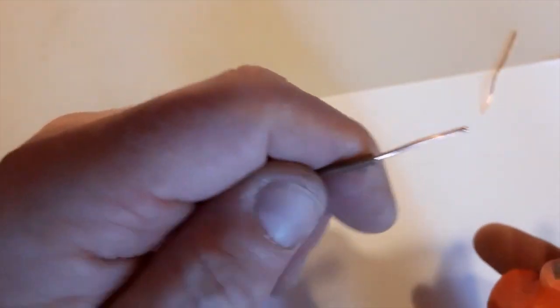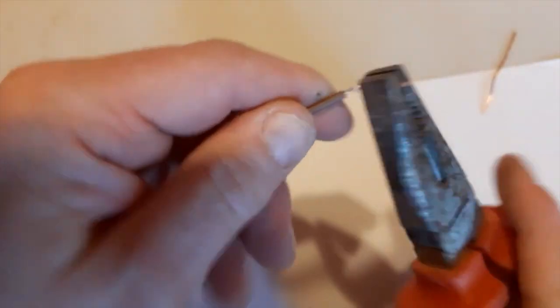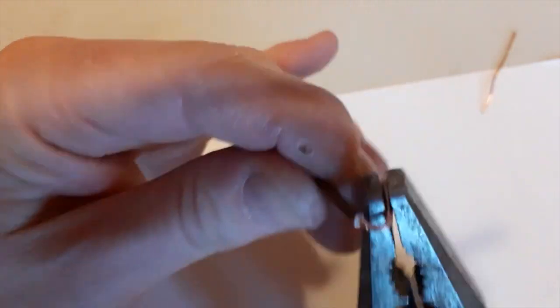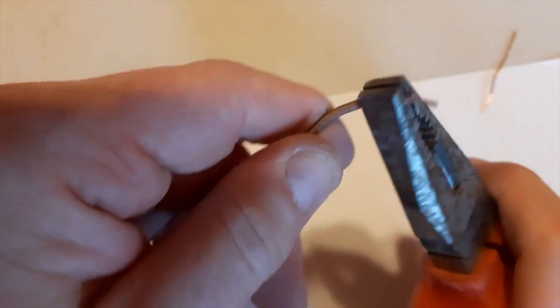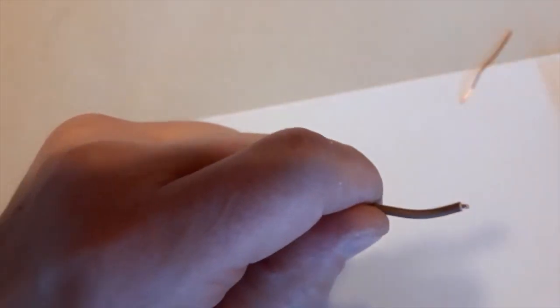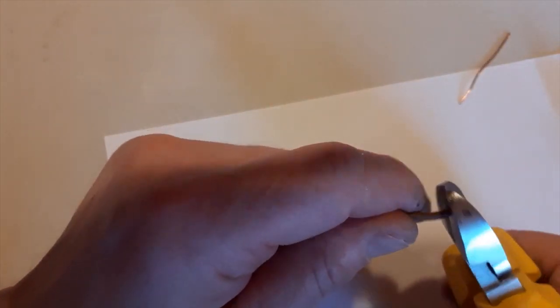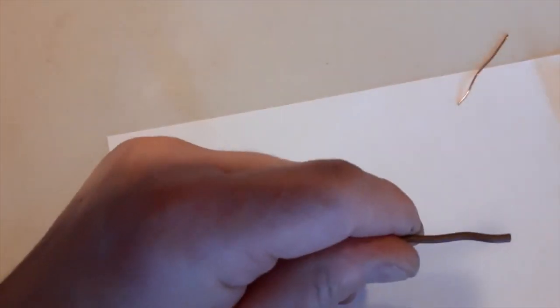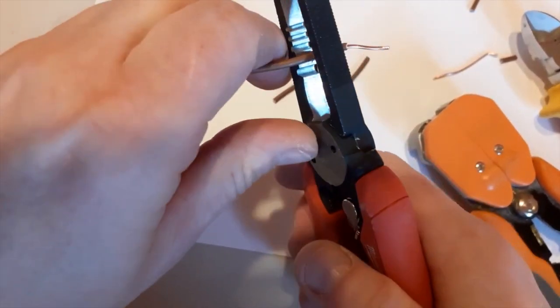So this is without it being damaged, you can see it's okay. It's where there's a little nick that the damage, the weakness comes. And it only takes the tiniest little scratch. You can try this yourself, just get a bit of cable, just put a little nick in it, bend it a few times, and you'll see that it'll just snap.